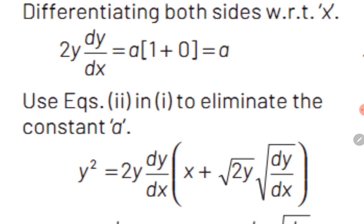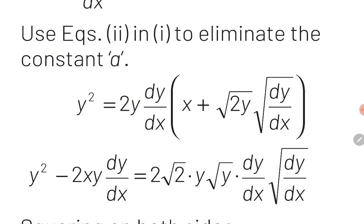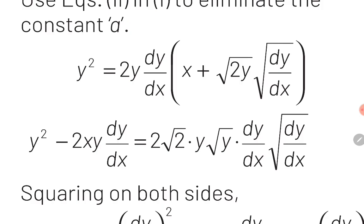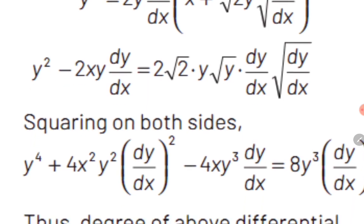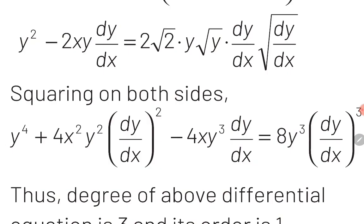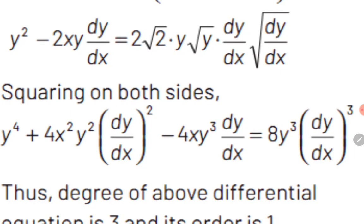We substitute this value of a into the first equation and obtain: y² = 2y·(dy/dx)·(x + √(2y·(dy/dx))). Opening the bracket on the right hand side and rearranging, the equation becomes y² - 2xy·(dy/dx) = 2√2·y^(1/2)·(dy/dx)·√(dy/dx). We then square both sides so that the square root terms get cancelled, obtaining: y⁴ + 4x²y²·(dy/dx)² - 4xy³·(dy/dx) = 8y³·(dy/dx)³.